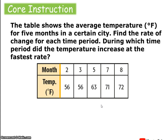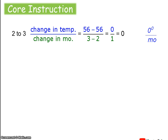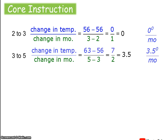First, identify the independent and dependent variables. When time is involved, that's going to be the independent variable, which makes temperature the dependent variable — temperature depends upon the month. From the second month to the third month, temperature changed from 56 to 56, which is zero change over one month — a rate of zero degrees Fahrenheit per month. From month three to five, it changed from 56 to 63 degrees, a positive seven-degree change over two months.